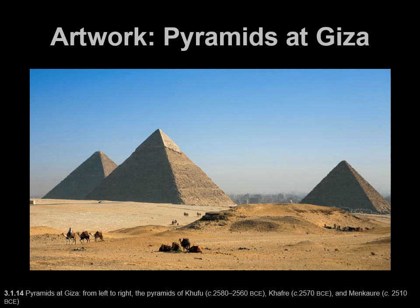Secondly, the whole funerary complex is located on the west side of the Nile River. If you can imagine, civilization grew upon the Nile River which runs north to south. What is the most obvious thing that happens in the west everywhere in the world? The sunset. So it's fitting that the pyramids are located on the west side of the river because they are funerary sculptures and buildings, and the sun sets in the west — signifying the end of life. So this is a very fitting place for the pyramids to be.